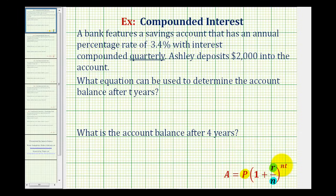N is the number of compounds per year. Notice it occurs here and here, so in this case, since the interest is compounded quarterly and there are four quarters in one year, N would be equal to four.